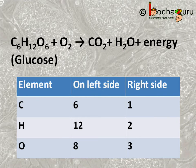But if you see, this equation is not balanced. Number of carbon atoms on the left side is 6, on right it is 1. Number of hydrogen atoms on the left side is 12, on the right side it is 2. Coming to oxygen atoms, the number is 8 on the left hand side and it is equal to 3 on the right side. So this is not a balanced equation.